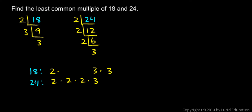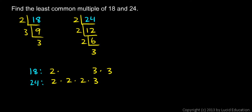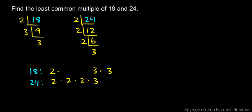Now you see I have numbers lined up. Here's a column of 3's, and this is also a column of 3's — even if there's only one number in that column, that's fine. And these are all columns of 2's. Now to get the least common multiple, I take one number from each column.